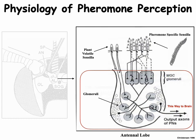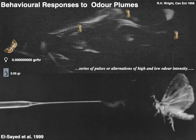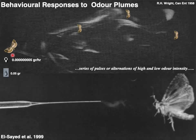Once the brain receives those signals it elicits a certain behavior. With behavioral responses to codling moth pheromone, males perceive the pheromone downwind and move upwind following a concentration gradient until they reach the female. This is quite remarkable given that the female emits pheromone at only five nanograms per hour — an incredibly small amount — yet males through the canopy are able to follow these plumes, find the female, and mate with her.